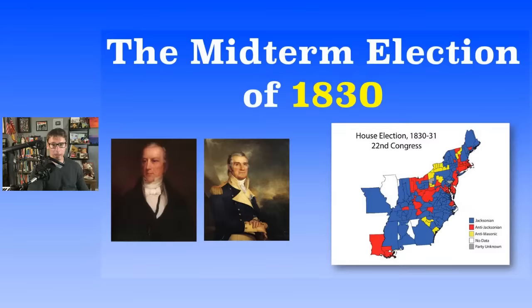The nullifier party arose after the nullification crisis — I have a video on that if you want to check it out. That happened in South Carolina, led by folks like John C. Calhoun. This was the first third party to gain power in the Senate. Meanwhile in the House, third parties came in — not just the nullifier party but the anti-Masonic party as well. Third parties are now part of both houses of Congress.